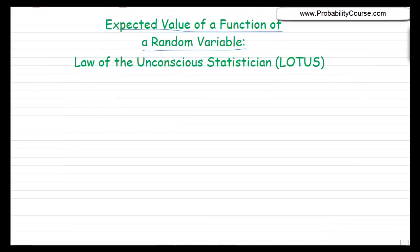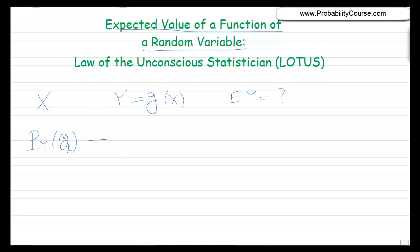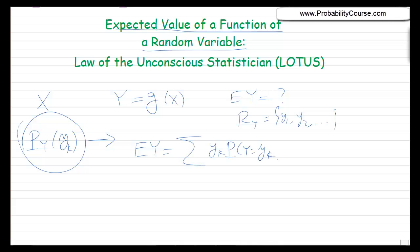Here is a general scenario. I have a random variable X, and another random variable Y which is g of X, and I want to know the expected value of Y. One way is to first find the probability mass function of Y — we find the probability that Y equals y for any y in the range of Y. Then we use the formula for expected value: the sum of yk times the probability that Y equals yk. But there is another way that is usually easier — we call it the law of the unconscious statistician, or LOTUS.